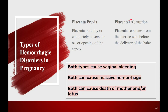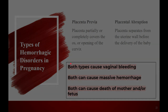We also have placental abruption. NCLEX books and Passpoint love to get you to know the difference between previa and abruption. They're both bad outcomes. In abruption, the placenta separates from the uterine wall before delivery of the baby. Both types cause vaginal bleeding, both can cause massive hemorrhage, and both can result in a dead mom and a dead baby.